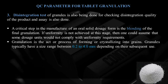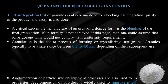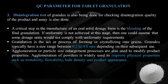Granules typically have a size between 0.2 to 4 millimeters depending on their subsequent use. Agglomeration or particle size enlargement processes are also used to modify product properties. Agglomeration of powder is widely used to improve physical properties such as wettability, flowability, bulk density, and product appearance of the dosage form.